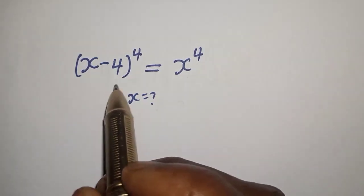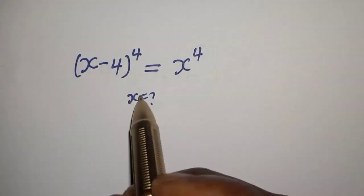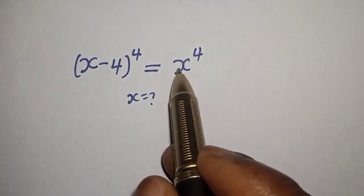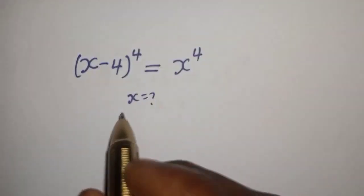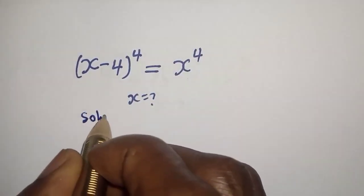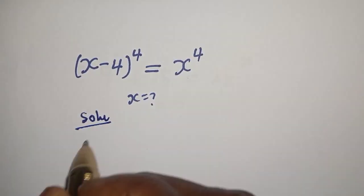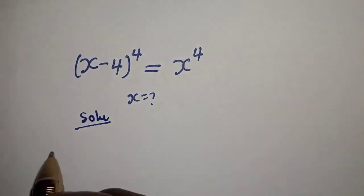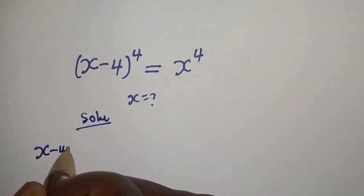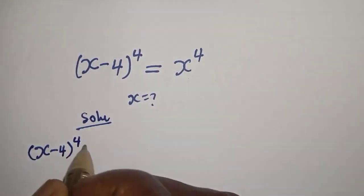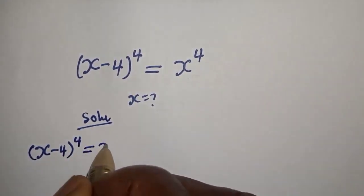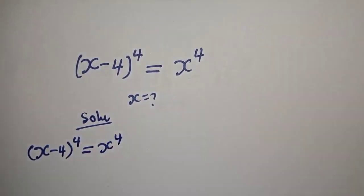Hello. How to solve for s from this equation: s minus 4 raised to power 4 is equal to s raised to power 4.